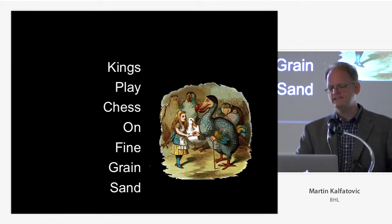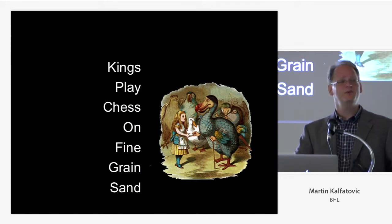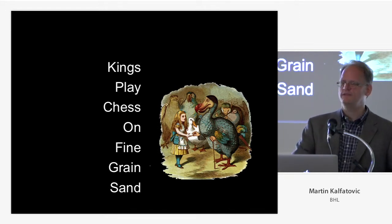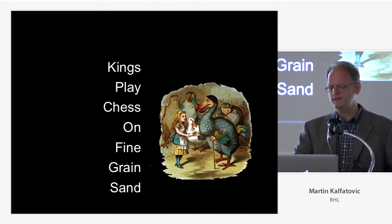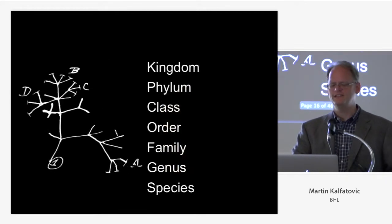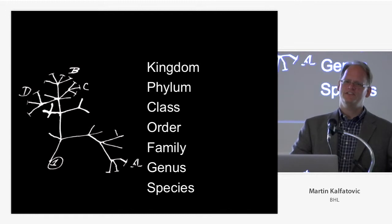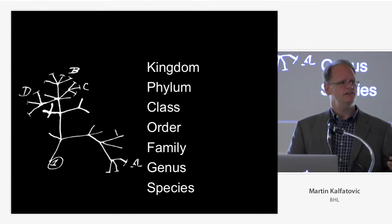A quick taxonomic lesson: Kings Play Chess On Fine-Grained Sand — kingdom, phylum, class, order, family, genus, species. Alice in Wonderland has been a bit of a theme in a lot of people's slides. As we know, Alice played chess in the Wonderland books and played with dodos amongst other things. This mnemonic is the basis of annotation within our BHL context in terms of finding information.